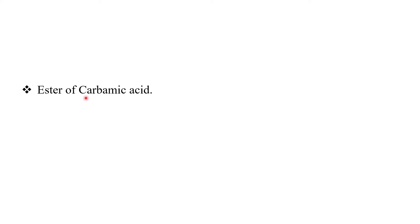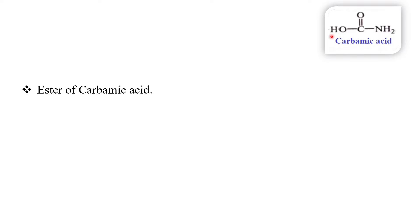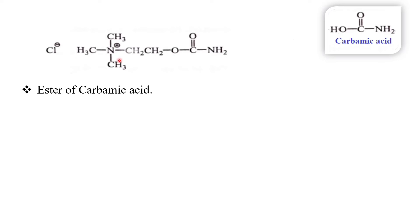Carbachol chloride is an ester of carbamic acid. Carbamic acid is NH2COOH — that is called carbamic acid. Now look at the structure of carbachol chloride. For carbamic acid, we have an H, and that H is replaced by the rest of the carbachol chloride structure — that is why it is an ester of carbamic acid.